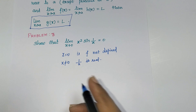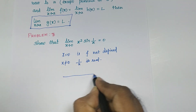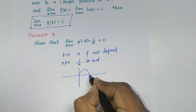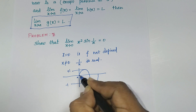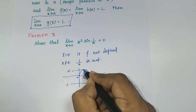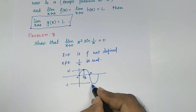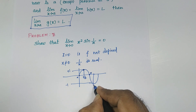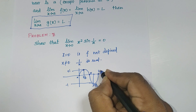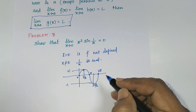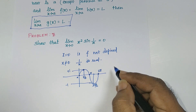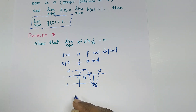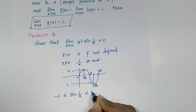Here we have sin(1/x). Consider the sin curve: the values range between +1 and -1. sin(0)=0, sin(π/2)=+1, sin(π)=0, sin(3π/2)=−1, sin(2π)=0, sin(5π/2)=+1, sin(7π/2)=−1, and so on. That means sin values are always within −1 to +1. So we write: −1 ≤ sin(1/x) ≤ +1.